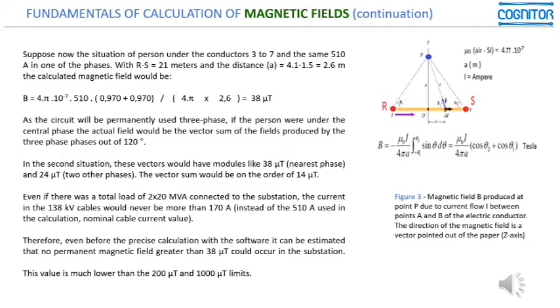Basically, the actual field would be the vectorial sum of the fields produced, and this would lead to a much lower value. This value would be something like only 14 microteslas.